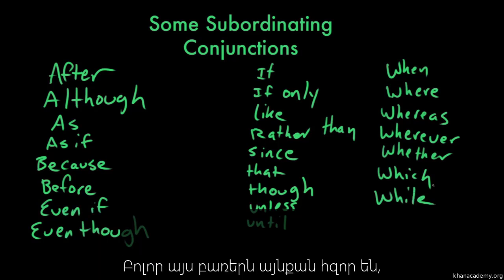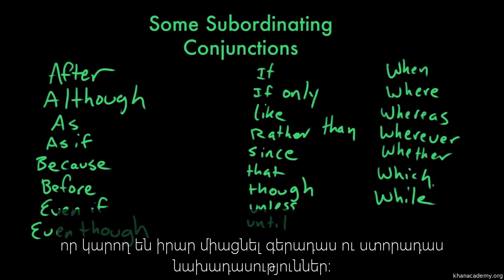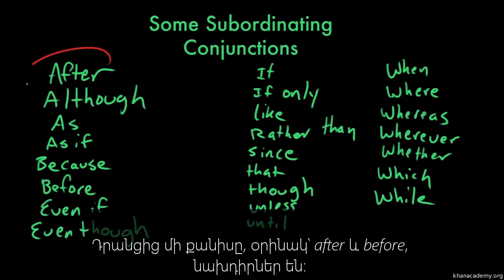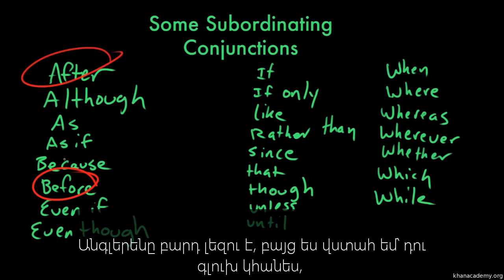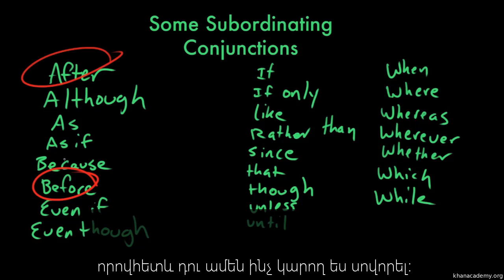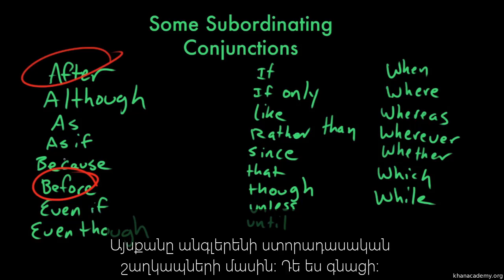All of these words have the power to unite independent and dependent clauses. You may notice some of them, like after and before, are prepositions — they can be used in many ways. English is complicated, but I am confident that you can figure this out, because you can learn anything. These are some of the subordinating conjunctions of English. David out.